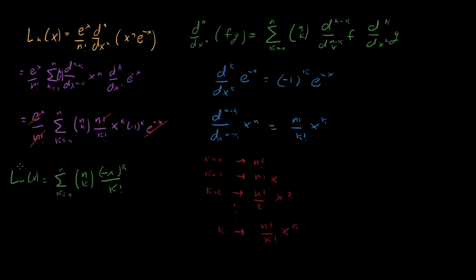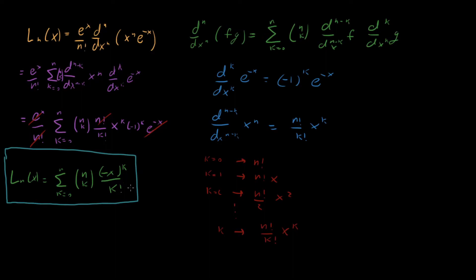That's our series representation for the Laguerre polynomial. This is actually really nice because it combines everything we love about series: we have the binomial coefficient from the binomial series, we have k factorial and x to the k like in a Taylor series, and then an alternating term with the minus sign. So this series combines all the familiar series structures into one single expression, and it's going to come up when we look at other properties of the Laguerre polynomials.